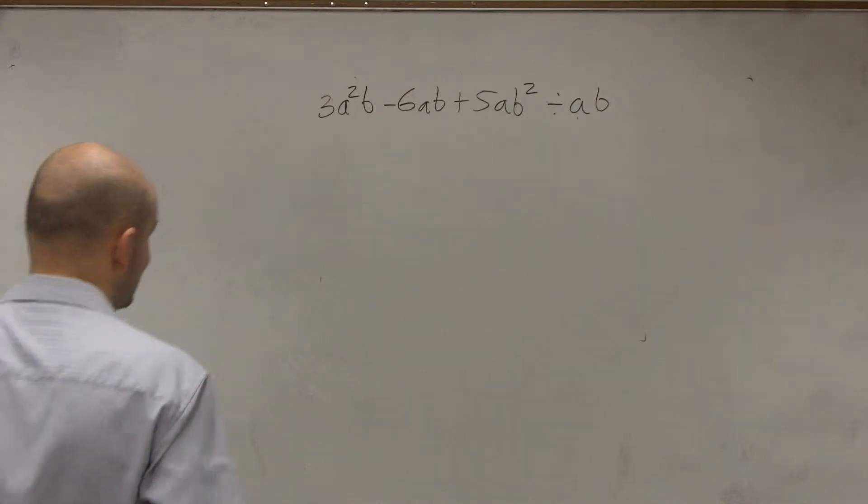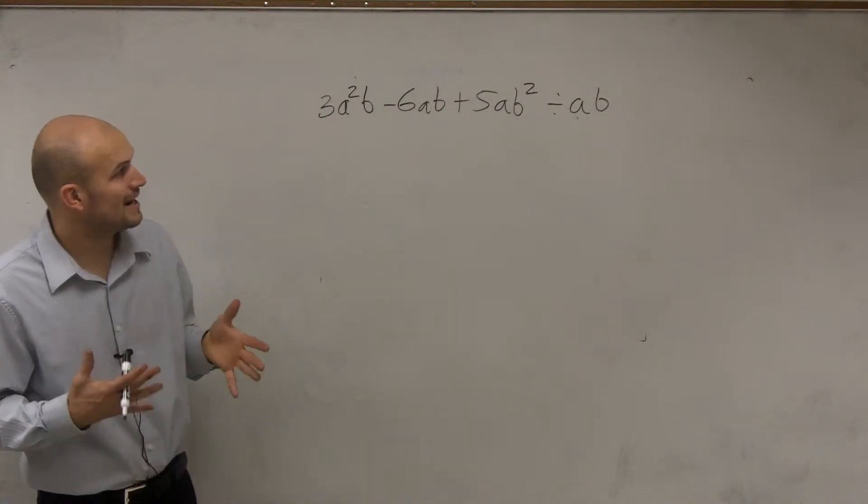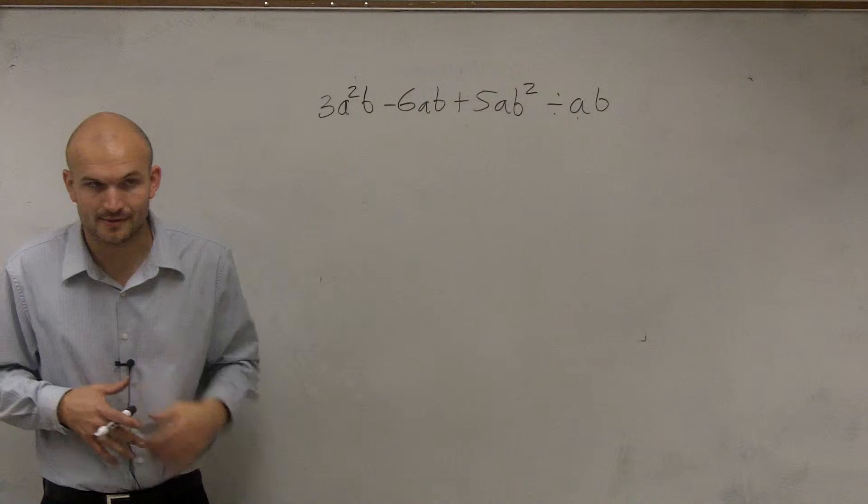Alright, so what I have here, ladies and gentlemen, is 3a squared b minus 6ab plus 5ab squared divided by ab.